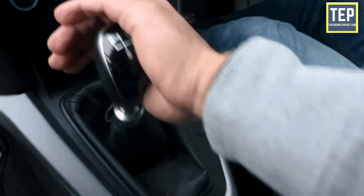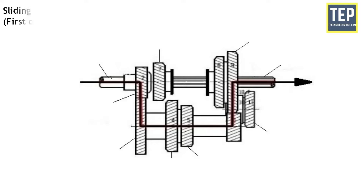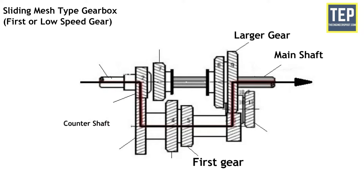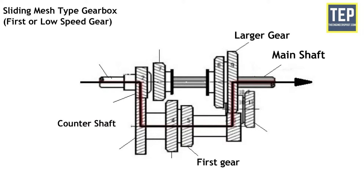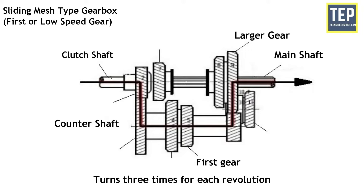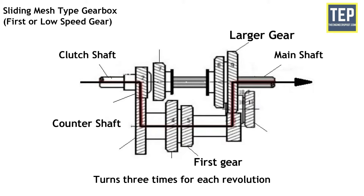By operating the gear shift lever, the larger gear on the main shaft is moved along the shaft to mesh with the first gear of the counter shaft. In first speed gear, the main shaft and the clutch shaft both rotate in the same direction. The clutch shaft turns three times for each revolution of the main shaft.